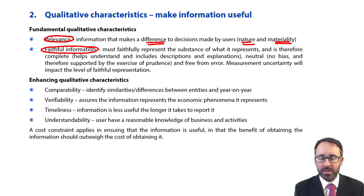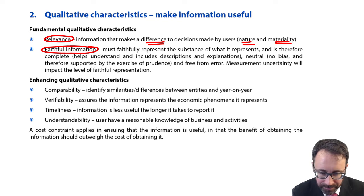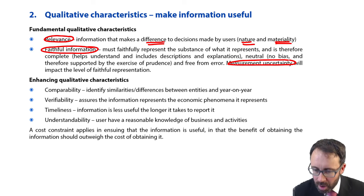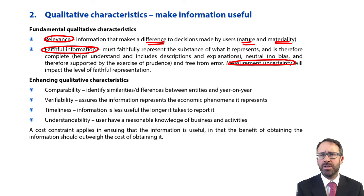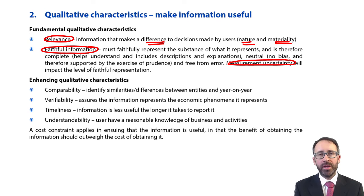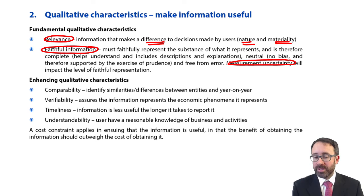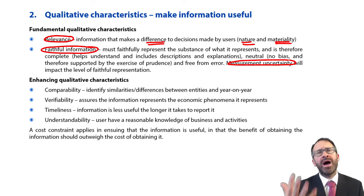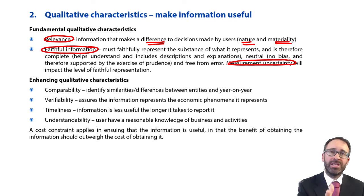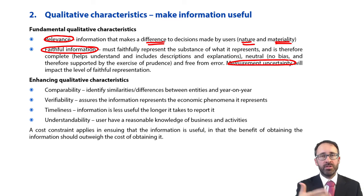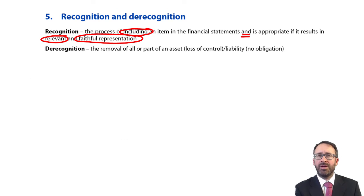If you think about faithful representation — it's complete, neutral, free from error. But what about measurement uncertainty? That impacts the level of faithful representation. So if there is a level of uncertainty with regards to measurement, then maybe we should not be including it within the financial statements. There will always be some uncertainty with regards to measurement, but the framework has said these are the measurement bases we have, and therefore that reduces the amount of measurement uncertainty. So you should be able to measure a significant portion of your assets and liabilities because you have measurement criteria.